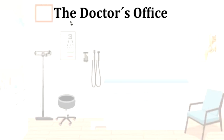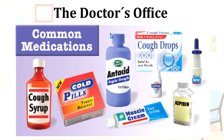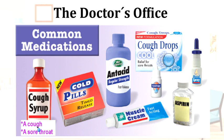Again, we are at the doctor's office. Last time we had vocabulary about different types of health problems. Today we have vocabulary about different common medications for those health problems. For example, here we have cough syrup. We take cough syrup for a cough, or maybe a sore throat.